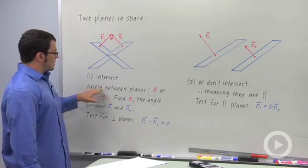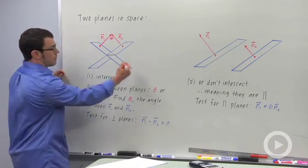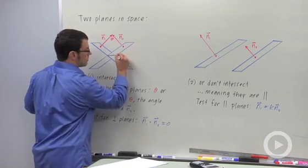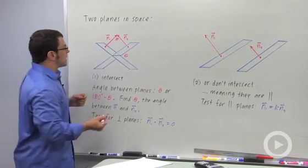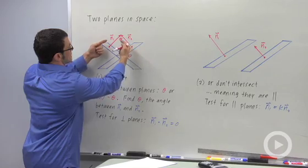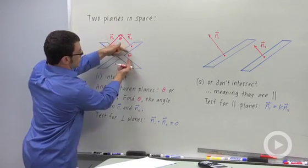The way to measure the angle between planes, and by that I mean this angle, is to measure the angle between their normals. You just have to be careful because if this angle is small, then this angle will be small.